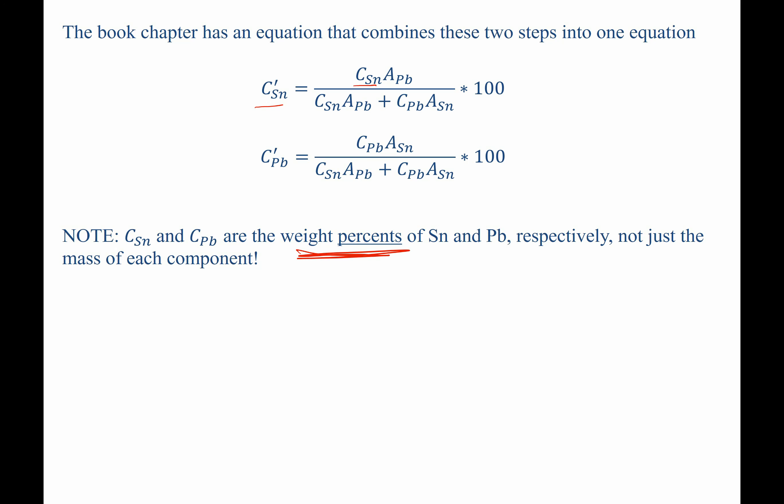So they're reversed, sn paired with the pb, pb paired with the sn. So before we use this formula, we need to convert c sub sn and c sub pb into weight percents. To do so, we write c sub sn equals 98 grams over 98 grams plus 65 grams times 100, to put in percent, equals 60.12 percent is the weight fraction of tin.